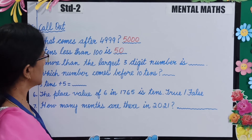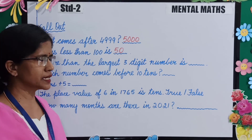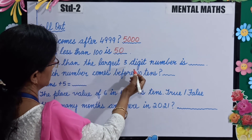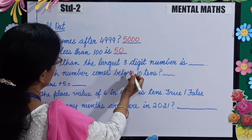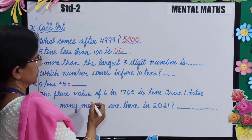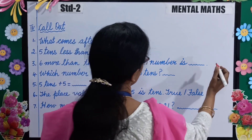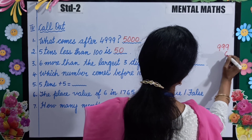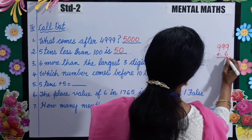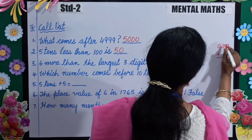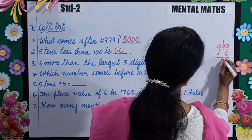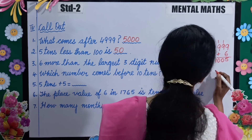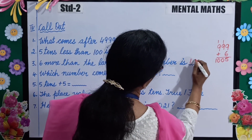6 more than the largest 3-digit number. The largest 3-digit number is 999, and you will add 6 to it: 999 plus 6. 9 plus 6 is 15, write 5 carry 1; 9 plus 1 is 10, write 0 carry 1; so your answer is 1005.